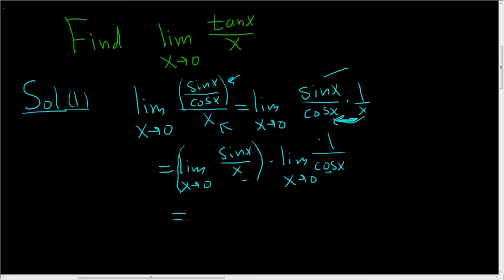Why? Because this limit here is 1. That's what we wanted to use. And then here you can just plug in zero. So you get 1 over cosine zero, which is 1 over 1. So you get 1 times 1 over 1, which equals 1.